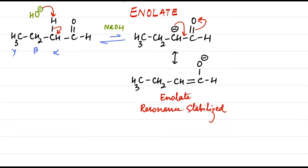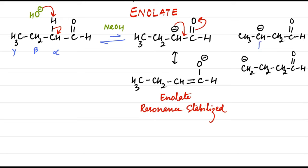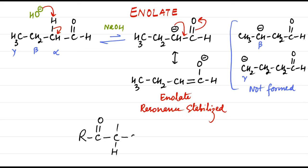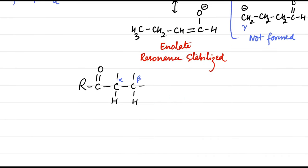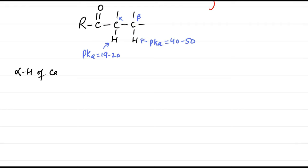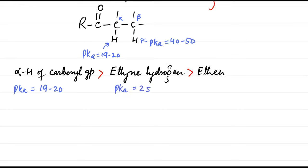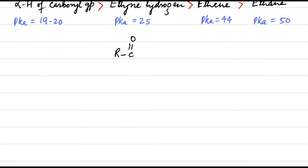The reaction is reversible and equilibrium favors the starting materials by about 100 to 1. The protons on the beta and gamma carbons are never removed; therefore, these carbanions are never formed. The pKa value of the alpha proton is 19 to 20 — quite acidic compared to the beta proton, whose pKa value lies between 40 to 50. In fact, the acidity of the alpha hydrogen of a carbonyl group is greater than that of ethylene (pKa 25), which in turn is greater than that of ethane (pKa 44), whereas that of ethane hydrogen is about 50. This unusual acidity of the alpha hydrogen can be understood in terms of the stability of the conjugate base formed after deprotonation.